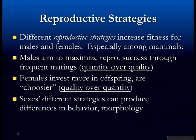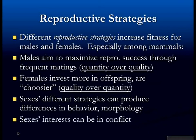The final critical point is that the different reproductive strategies of the different sexes can produce differences in behavior and in morphology. Morphology means traits, features, anatomical differences. And it can also mean that the interests of the sexes can be in conflict within one another, even within the same species.